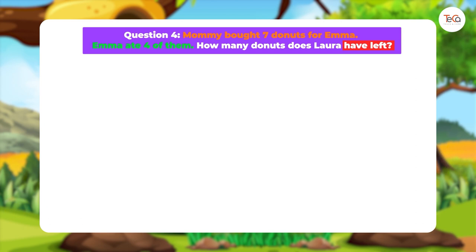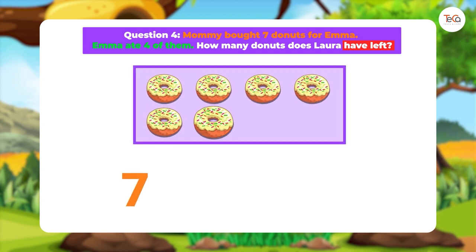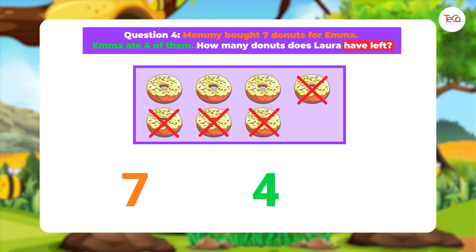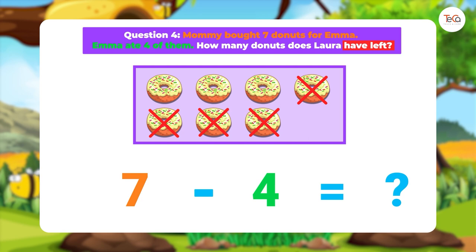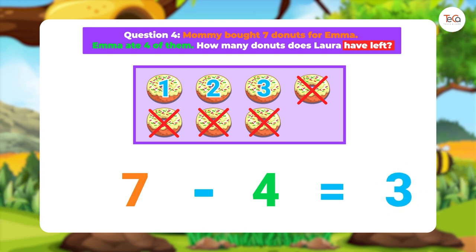To solve this problem, you can draw seven doughnuts that Mummy bought for Emma. Then cross out four doughnuts to show the number Emma ate. To find the number of doughnuts Emma has left, just subtract four from seven, and count the doughnuts that have not been crossed out. We have one, two, three doughnuts left. So we answer: Emma has three doughnuts left.